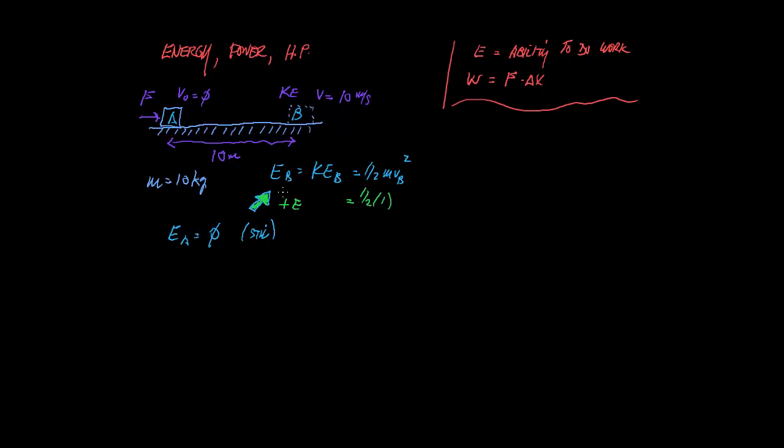That's half times 10 for the mass times 10 squared for velocity. So that's 100. Half of that is 5. That's going to be 500 joules of energy. How much work did we do? Well, we had to do 500 joules of work because that's how much energy it has.